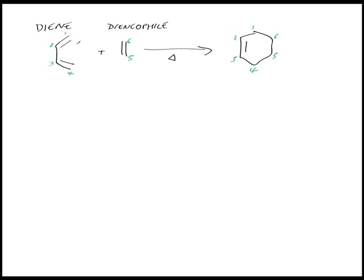The Diels-Alder reaction involves the reaction between a diene with a dienophile with a bit of heat to give a cyclohexene ring. Now I've labeled these up in order of the carbons just to illustrate that these are the carbons that form here.